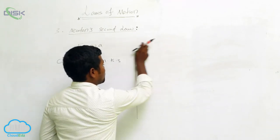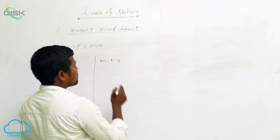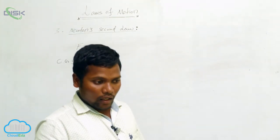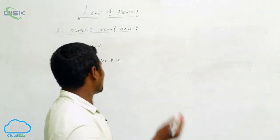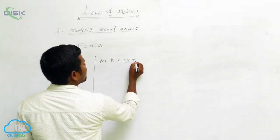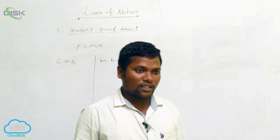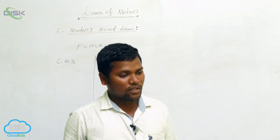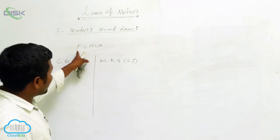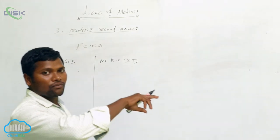MKS has another name as well — just like a child at home gets a pet name, MKS is also called the SI unit. There is no difference between the MKS system and the SI system. Now we will derive the force — in the CGS system, which measurement is there for force, and in the MKS system, which measurement is there for force.